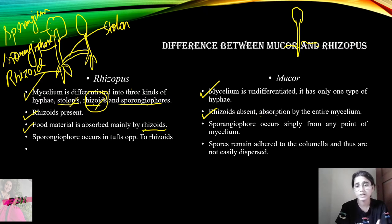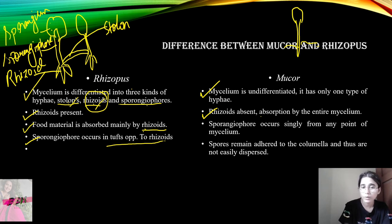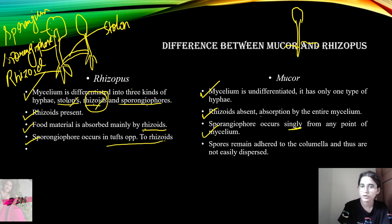In Rhizopus, the sporangiophores occur in a tuft, just opposite to the rhizoid — the rhizoid will be just opposite and the sporangiophores will be together in a tuft. But in Mucor, the sporangiophore will occur singly — only one sporangiophore will be here, and it will not develop in a tuft.